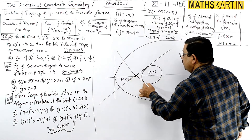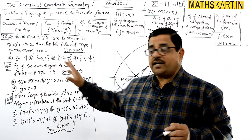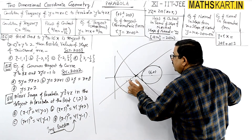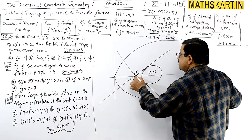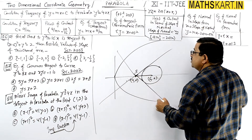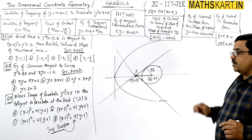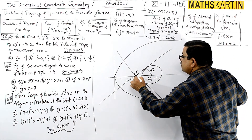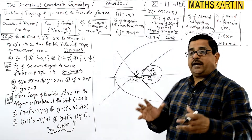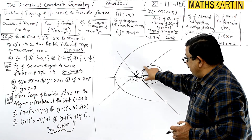Two focal chords can pass through the parabola. The condition is that both focal chords are tangents to the circle. The focus is at point (4, 0) and the circle center is at (6, 0), so the distance SC is 2. The radius is √2. This gives us a right-angle triangle to work with.